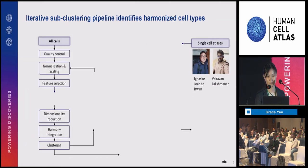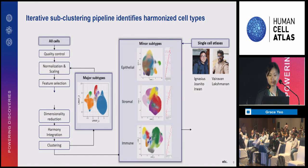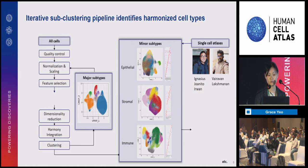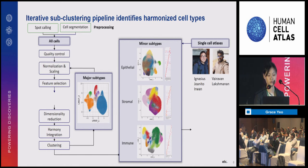This is still atlasing, so we go to cell typing first. In cell typing, we use an iterative sub-clustering pipeline very similar to what's used in single-cell RNA sequencing studies — identifying major and minor subtypes with reference to single-cell atlases annotated by colleagues Jonito and Verovan. There are key differences for spatial data. First is in preprocessing: because we use imaging-based technologies, our raw data is images rather than sequencing reads, so preprocessing steps are spot calling and cell segmentation rather than realignment. These introduce different kinds of errors into downstream analysis.